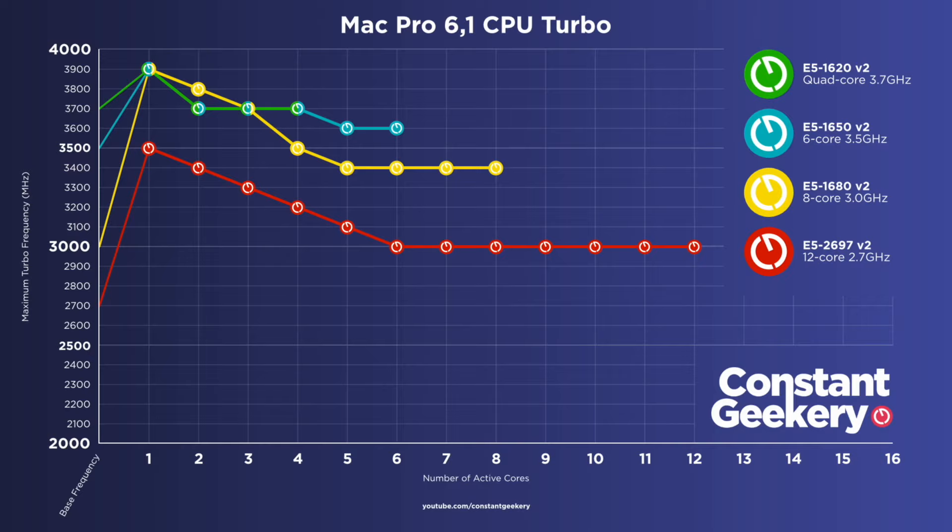For single-threaded performance, the 8-core is the fastest of all the CPUs, despite the quad-core having a higher base frequency. This is because the 8-core has more than double the cache RAM of the other two CPUs that share the same 3.9 gigahertz turbo, which is why it scores higher. This is just one benchmark, but based on all the research done, these results match real-world performance. The sweet spot is without doubt the 8-core model.